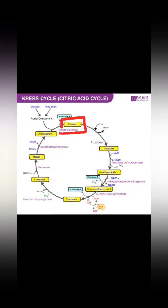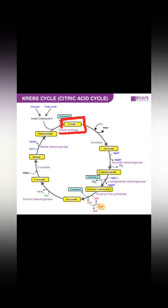Citrate is converted into isocitrate — these two are isomers of each other. This conversion happens in the presence of the enzyme aconitase.